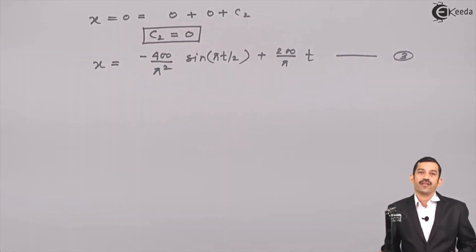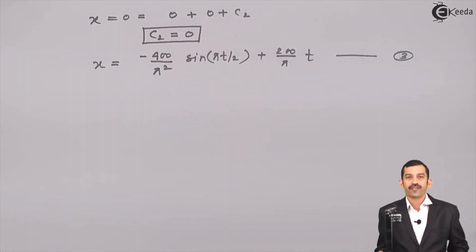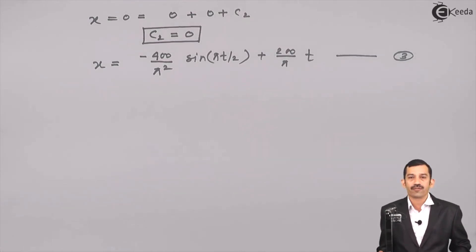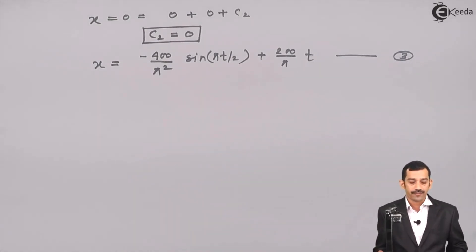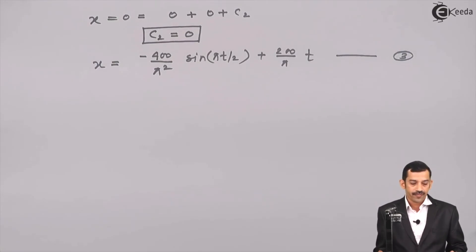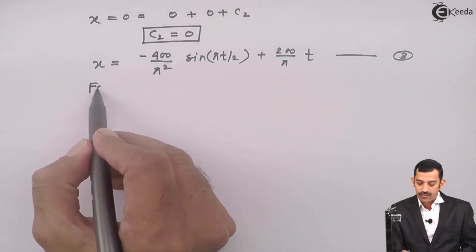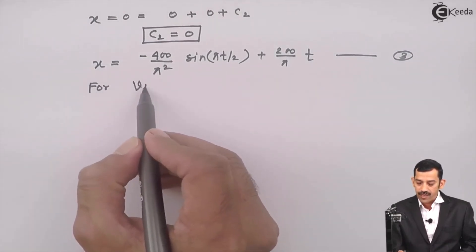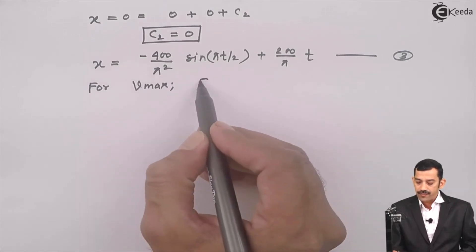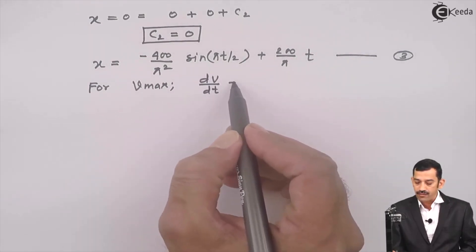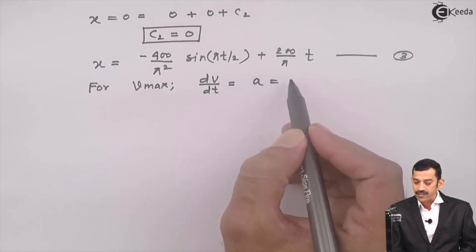Now we have all three equations: equation 1 is acceleration, equation 2 is velocity in terms of time t, and equation 3 is position in terms of time t. To find maximum velocity, the condition is dv/dt = 0, where dv/dt represents acceleration equal to zero.